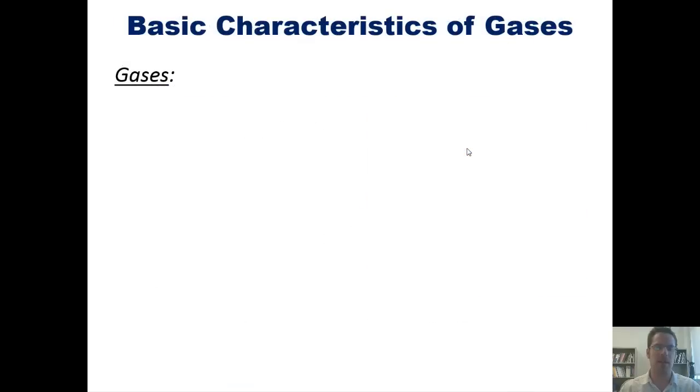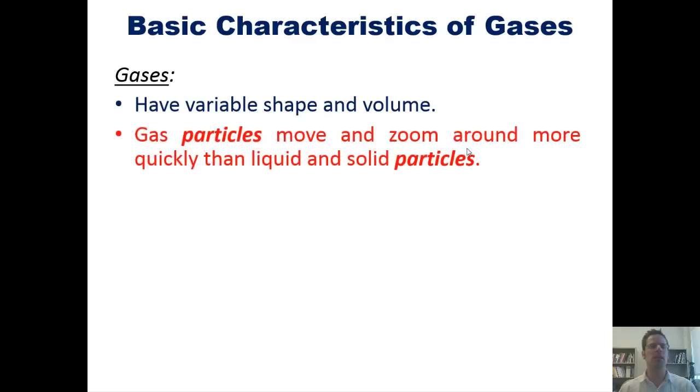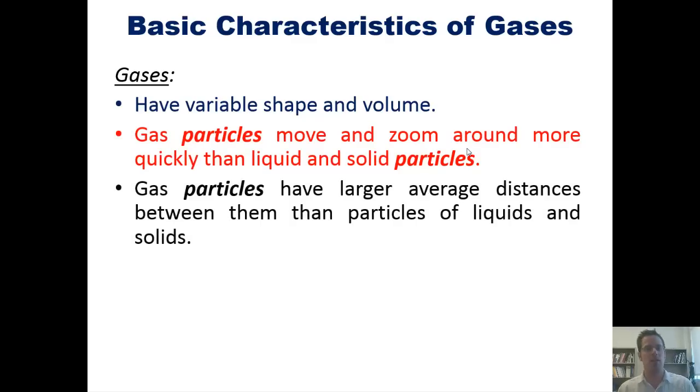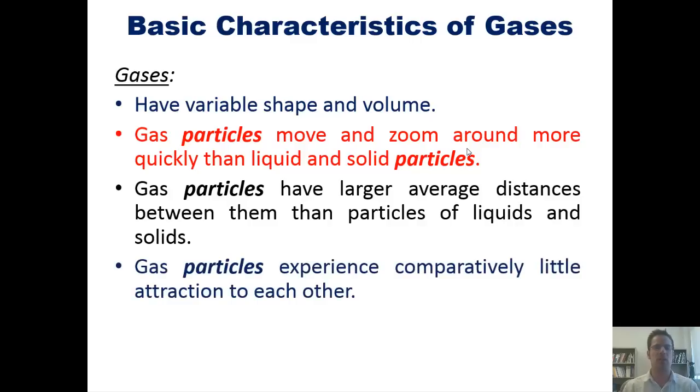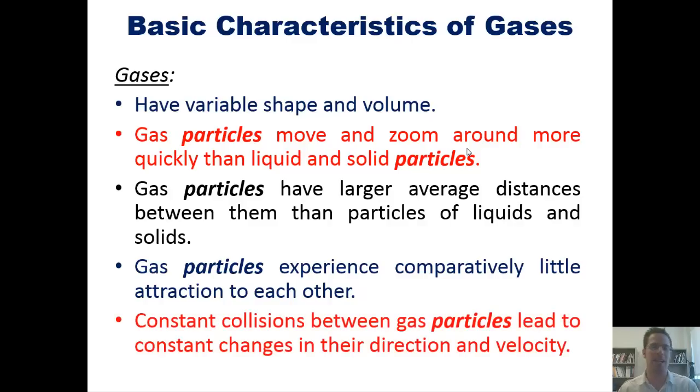Let's now look at gases. Gases have variable shape and volume. The volume part is different from liquids. Gas particles move and zoom around much more quickly than the particles in liquids and solids. Gas particles have larger average distances between them than the individual particles for liquids and solids. Gas particles experience comparatively little attraction to each other. And constant collisions between gas particles lead to constant changes in their directions and velocities.